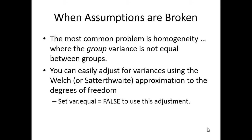When homogeneity is violated you can fix it by changing var.equal, which will do a Welch-Satterthwaite approximation for degrees of freedom — editing degrees of freedom, which then changes p. It doesn't change anything on the T side — it's all on the degrees of freedom side. If you have problems with linearity, you've got to do a nonparametric test. If you have problems with normality, you need more people.